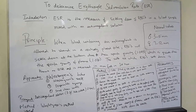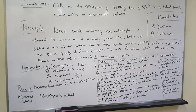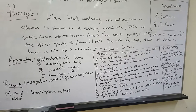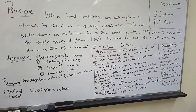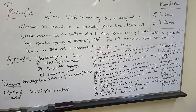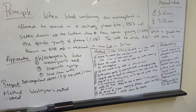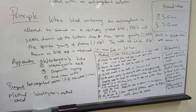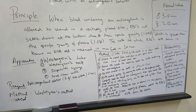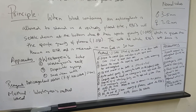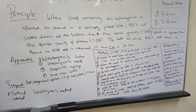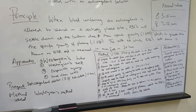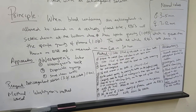When blood containing an anticoagulant solution is allowed to stand in a vertically placed tube in the upright position, the RBCs will settle down at the bottom due to their specific gravity, which is greater than the specific gravity of plasma. The rate at which the RBCs settle down is the ESR, which is measured in millimeters fall in the first hour.